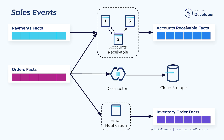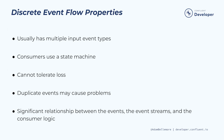Each of these three use cases reads from the very same order's fact stream but treats the data as either continuous or discrete depending on the consumer's unique business case. Let's review some of the discrete event flow properties. Usually, a discrete event flow will have multiple input event types, and consumers will use a state machine to transition between multiple states. Discrete event flows typically cannot tolerate loss — missing even just a single event can get you into a bad state. Similarly, duplicate events can also cause problems. With discrete event flows, there is a significant relationship between the events, the event streams, and the consumer processing logic.